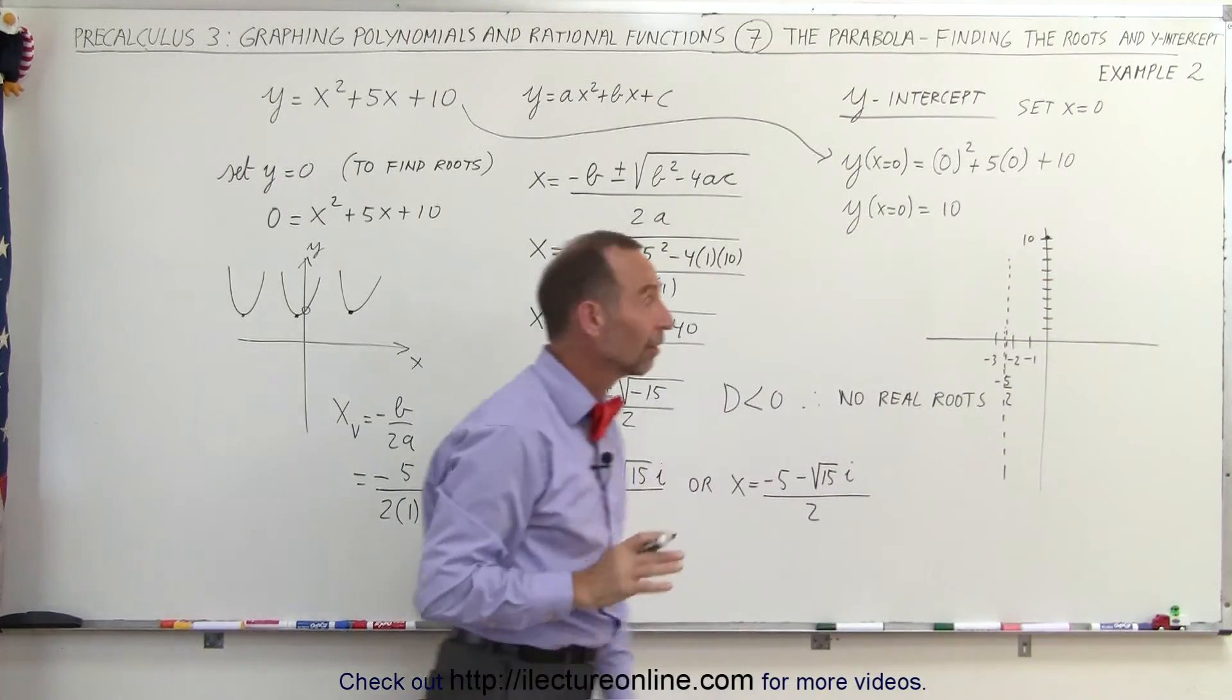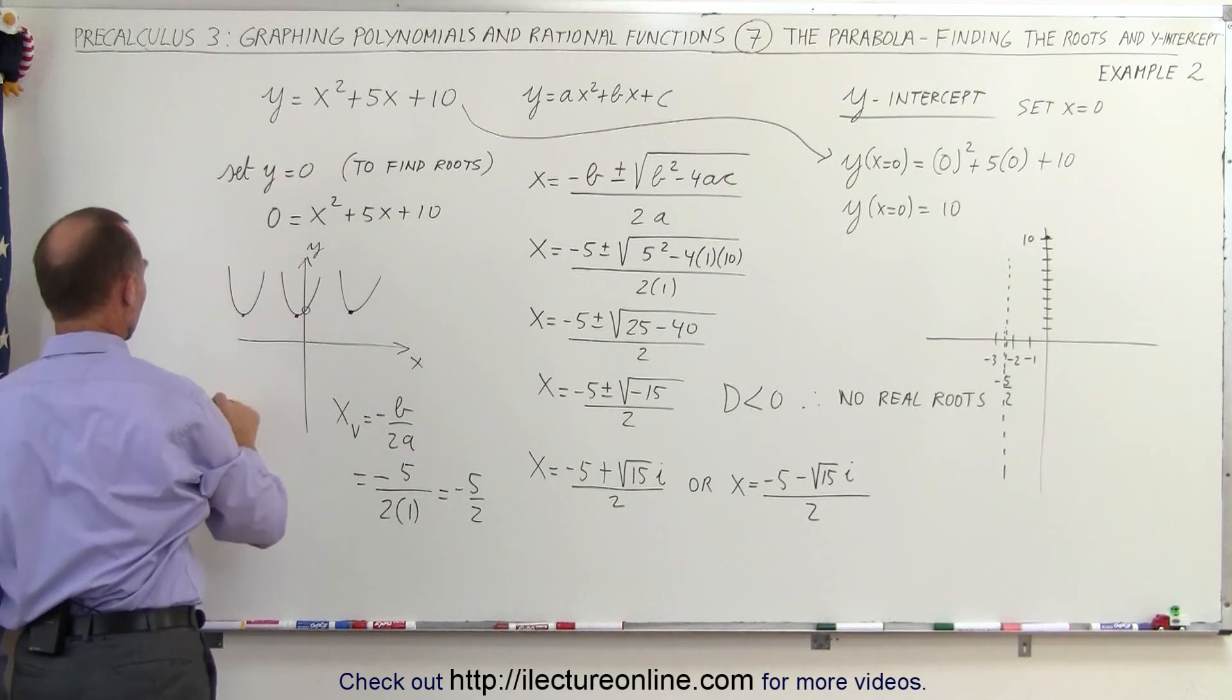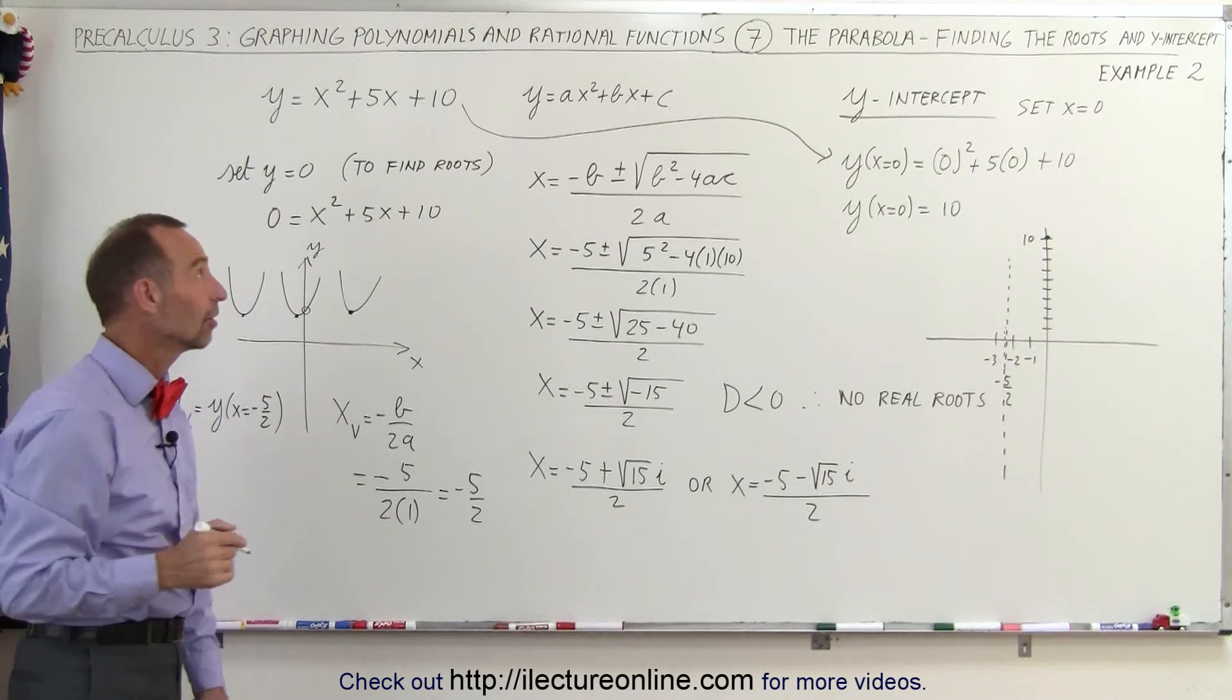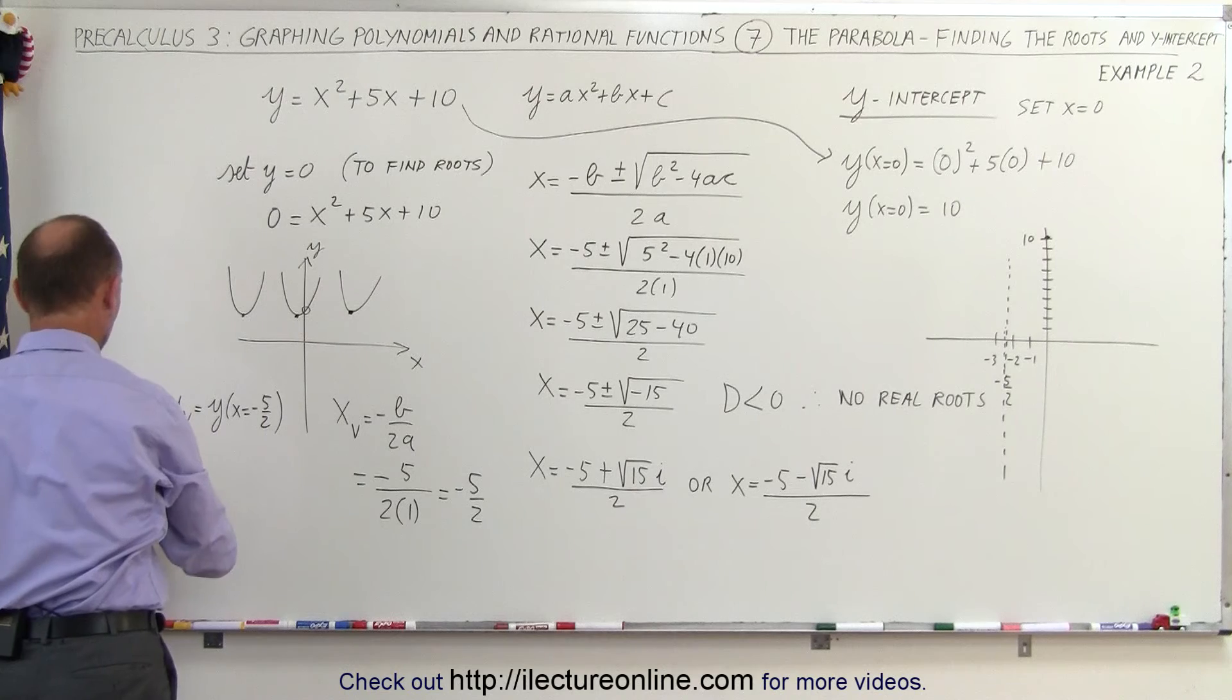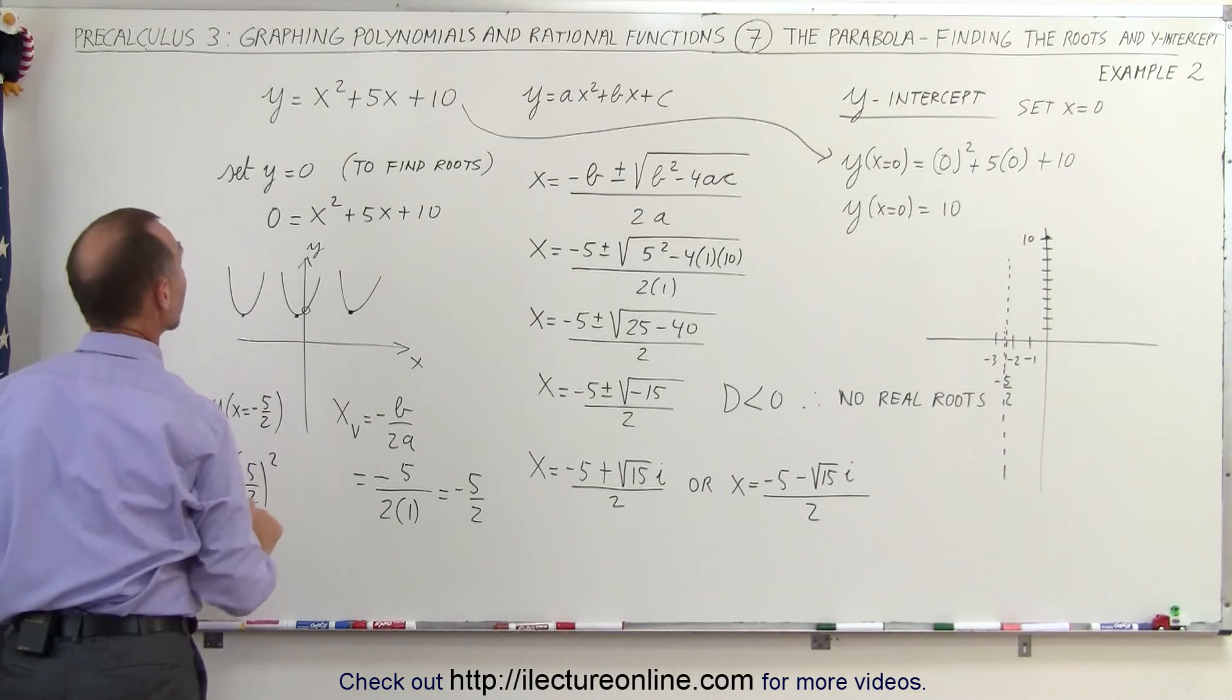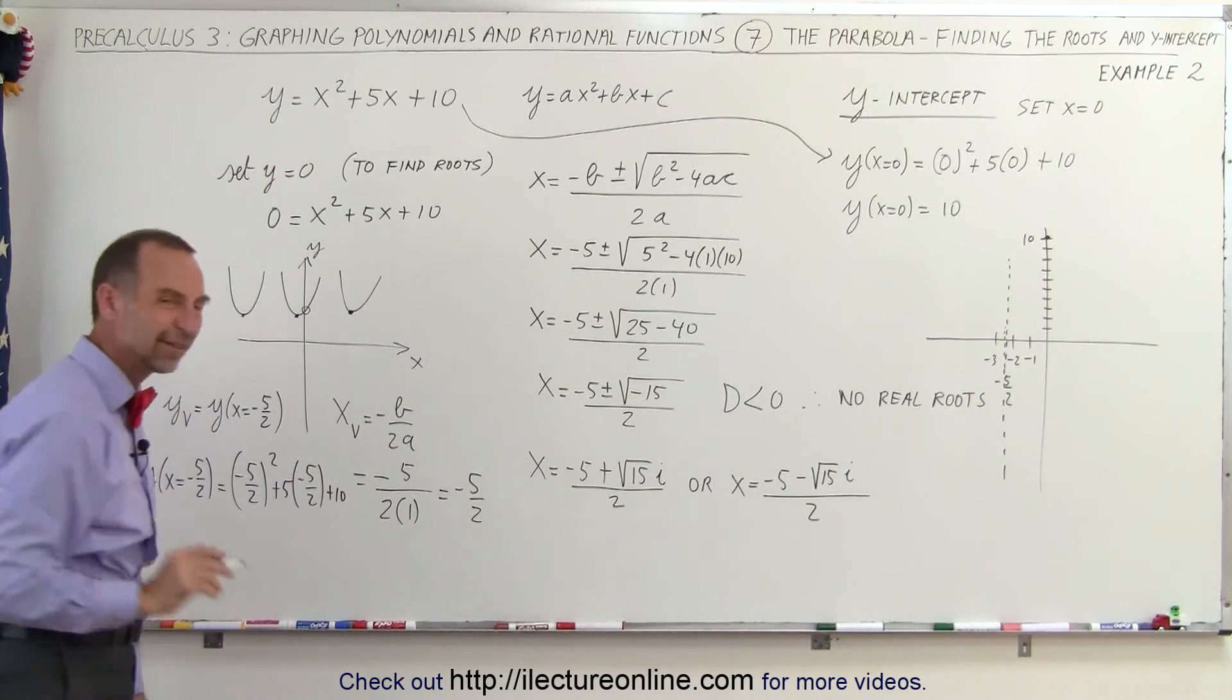Now to find the y-value of that vertex, we need to find y sub v, which is equal to the function y when x is equal to negative 5 over 2. So to find the corresponding y-value of the vertex, we must plug in minus 5 over 2 in the original function. So y when x equals negative 5 over 2 is equal to negative 5 over 2 quantity squared plus 5 times negative 5 over 2 plus 10.